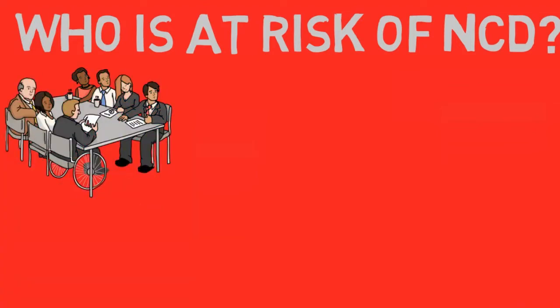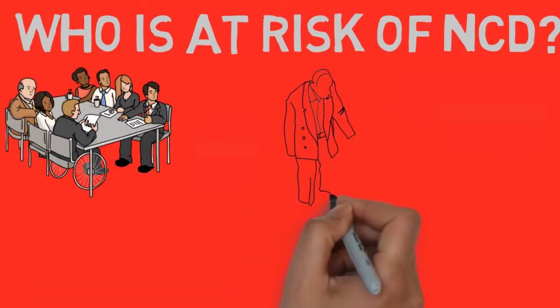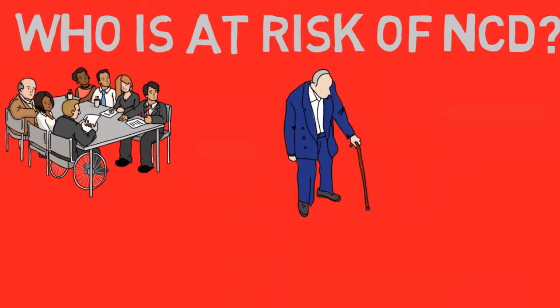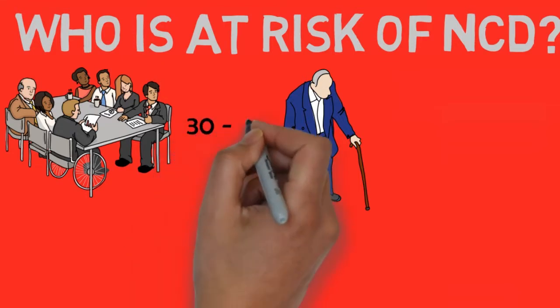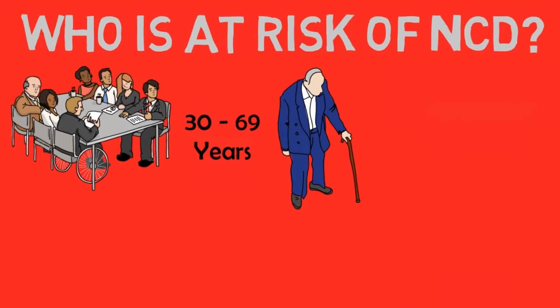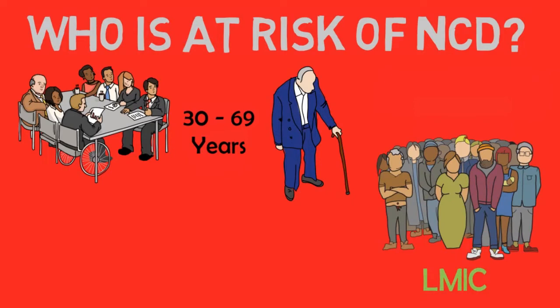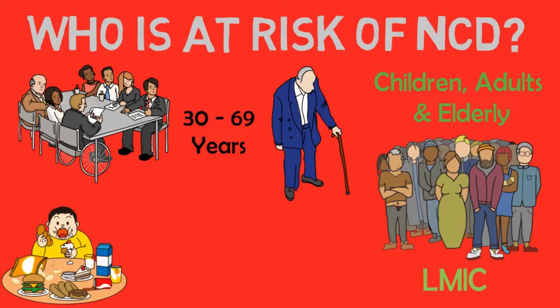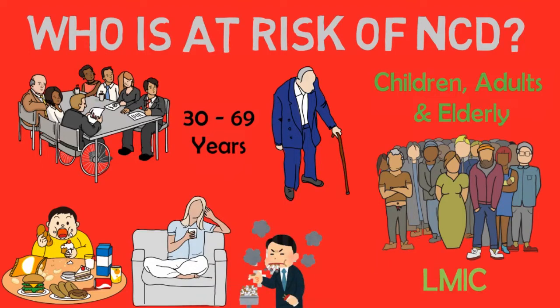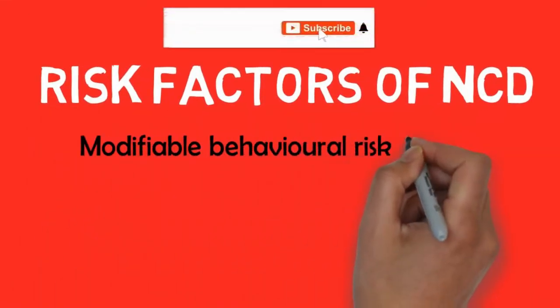People of all age groups, regions, and countries are affected by non-communicable diseases. These conditions are often associated with older age groups, but evidence shows that more than 15 million of all deaths attributed to NCDs occur between the ages of 30 and 69 years. Of these premature deaths, 85 percent are estimated to occur in low and middle-income countries. Children, adults, and the elderly are all vulnerable to risk factors contributing to NCDs, whether from unhealthy diets, physical inactivity, exposure to tobacco smoke, or the harmful use of alcohol.